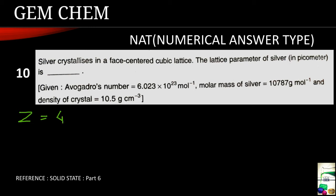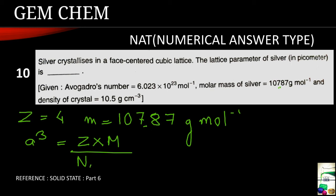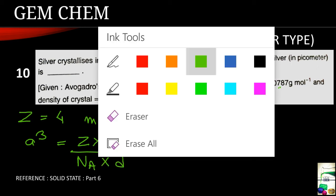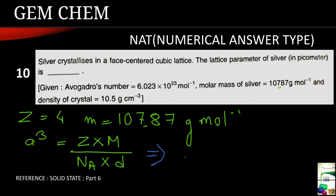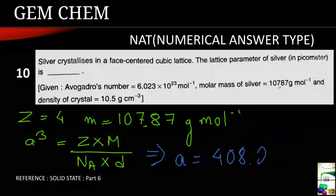So we know that for FCC Z equals 4 and M is given as 107.87 gram per mole, and A cube is equals to Z into M by Avogadro number into density. Now we substitute the values here and ultimately we get A is equals to 408.2 picometer.